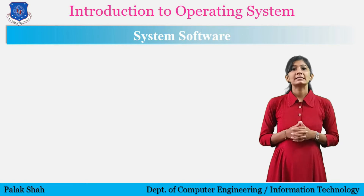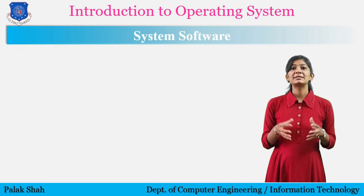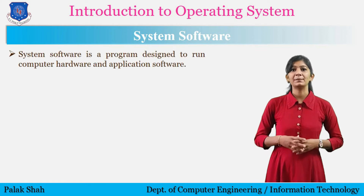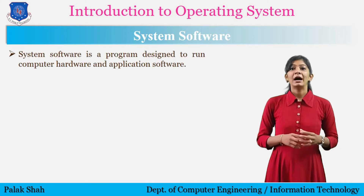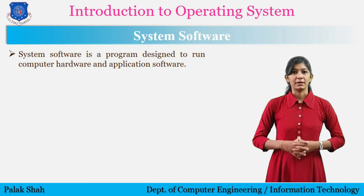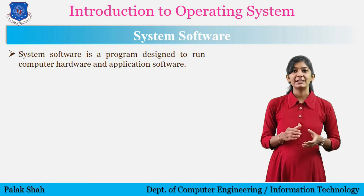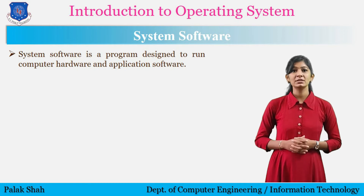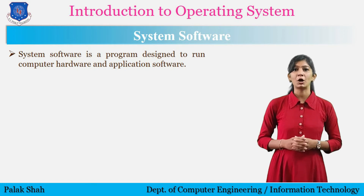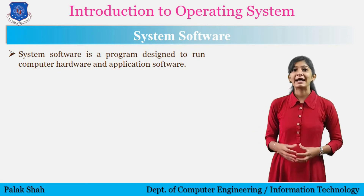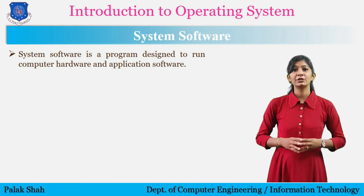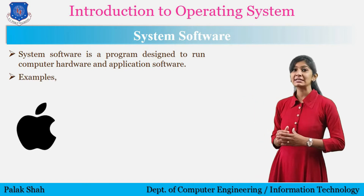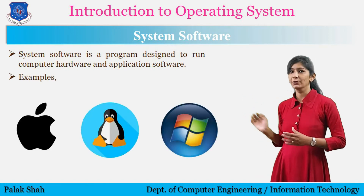System software serves as the base for application software. System software is a program designed to run computer hardware and application software. System software such as device drivers, operating systems, compilers, disk formatters, and utilities help the computer to operate more efficiently. Examples of system software include device drivers and operating systems like macOS, Linux, and Windows.